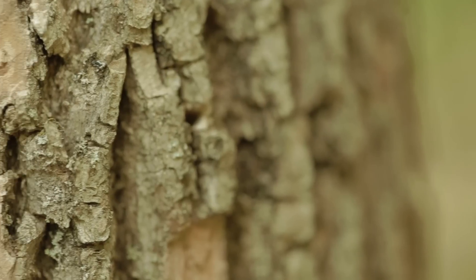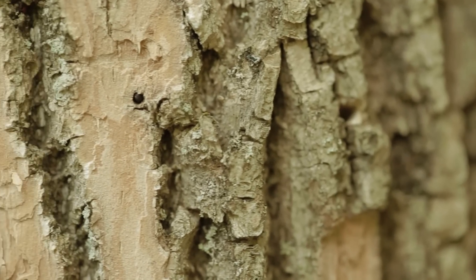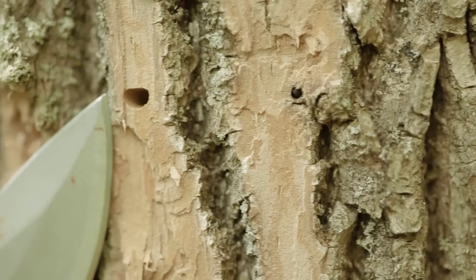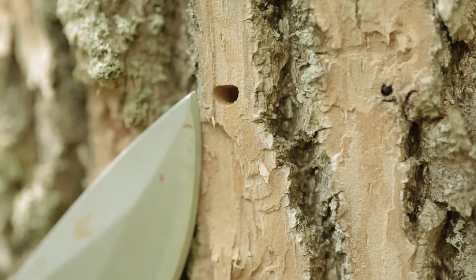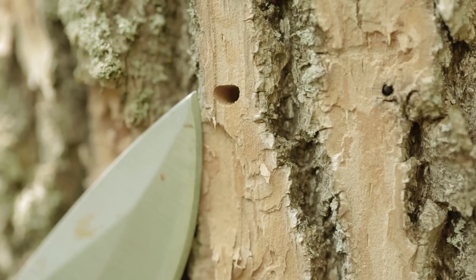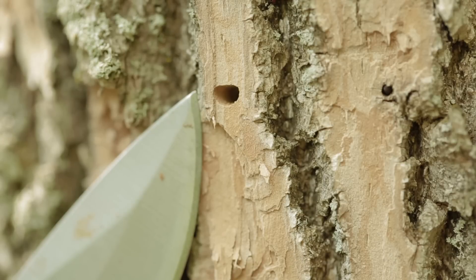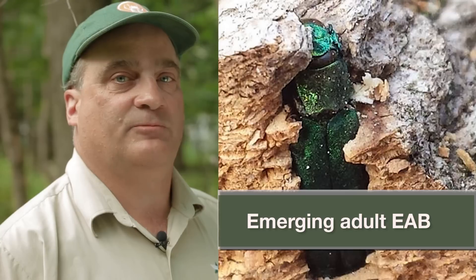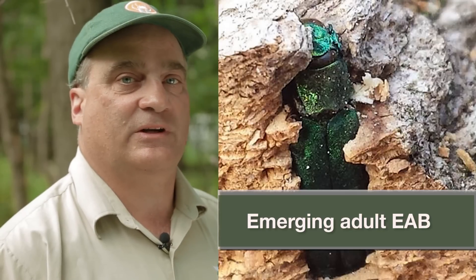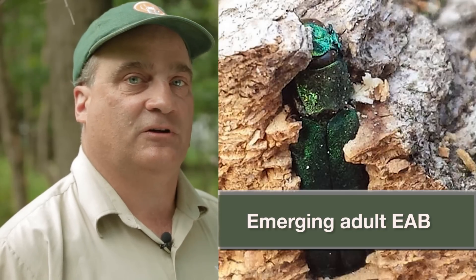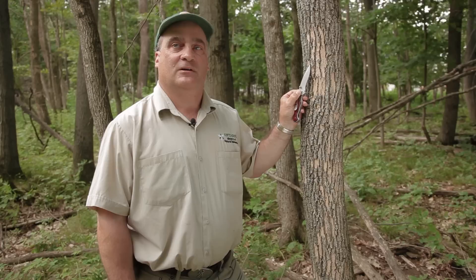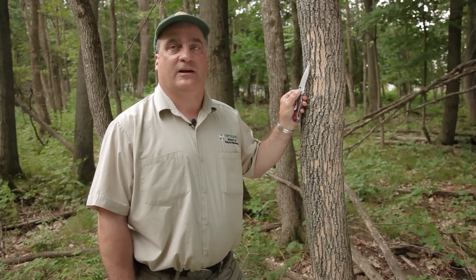This is the exit hole made by the adult emerald ash borer. The hole is about three and a half to four millimeters across, shaped like the capital letter D — flat on one side and semi-circle on the other, and always perpendicular to the bark. The larva feeds underneath the bark, pupates underneath the bark, and then about two weeks later the pupa changes into an adult beetle that chews its way through. The beetles then emerge, mate, lay their eggs, and attack other ash trees.